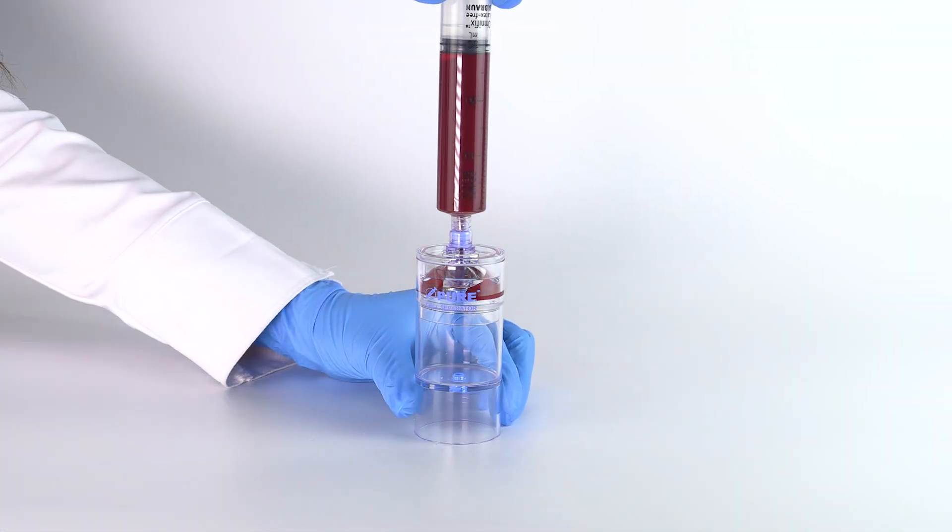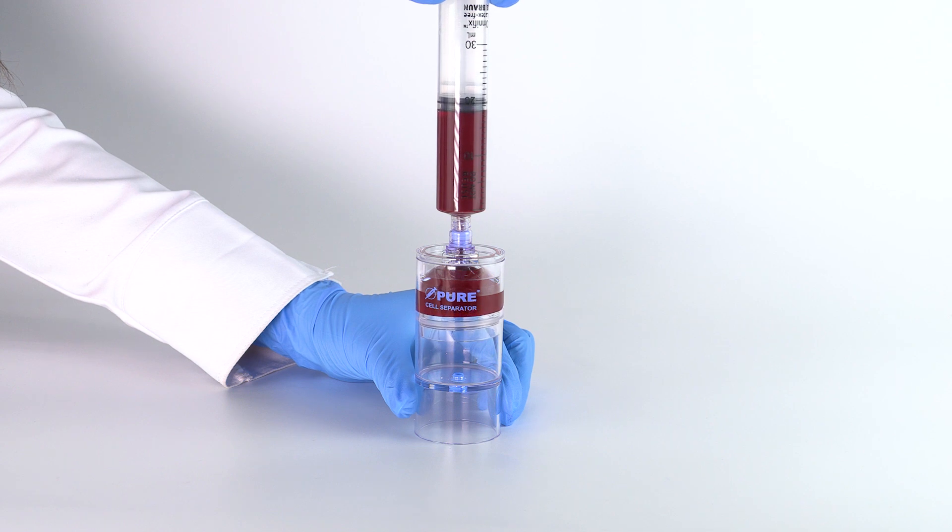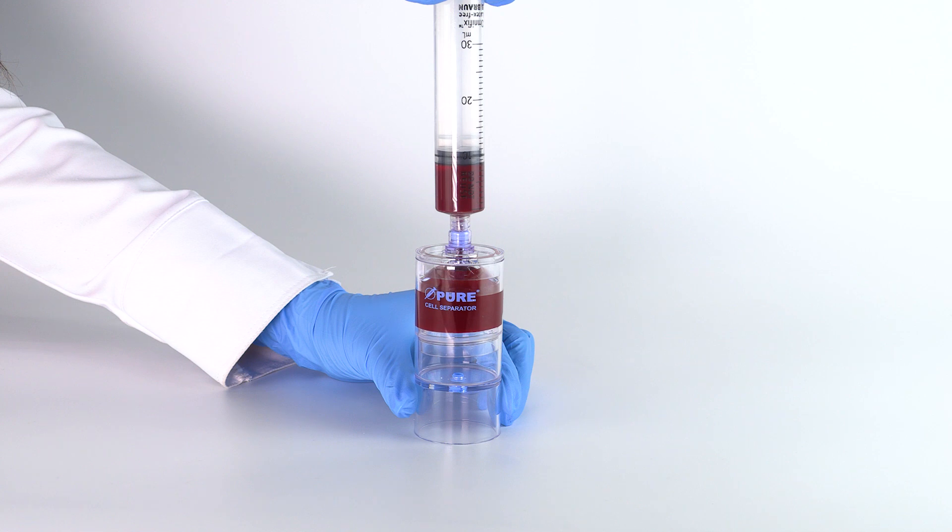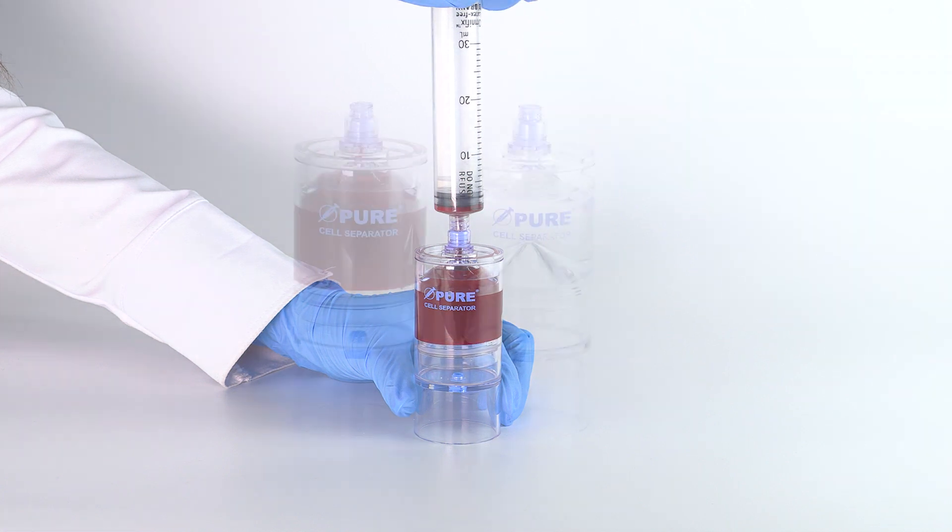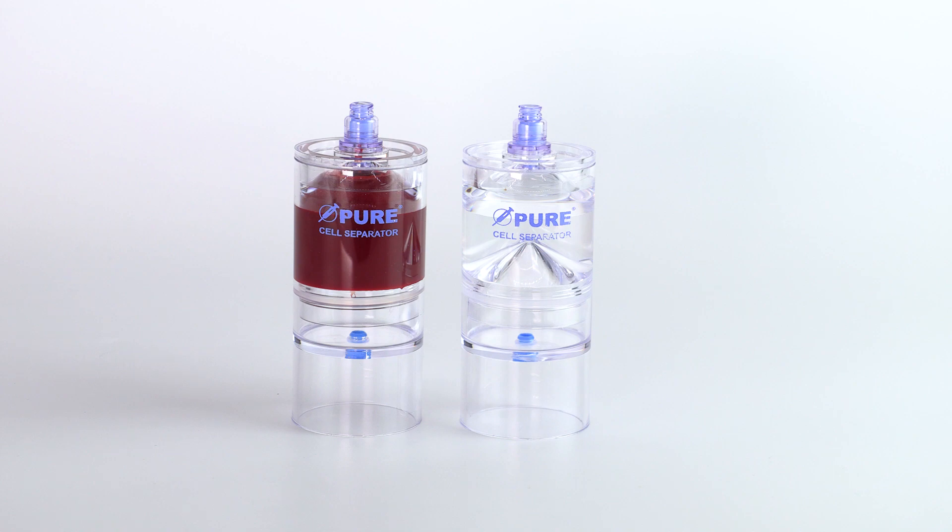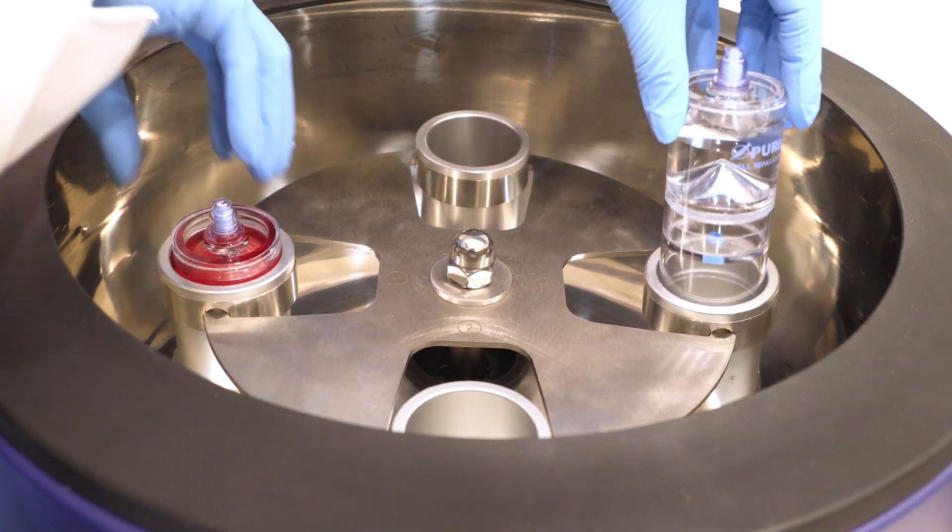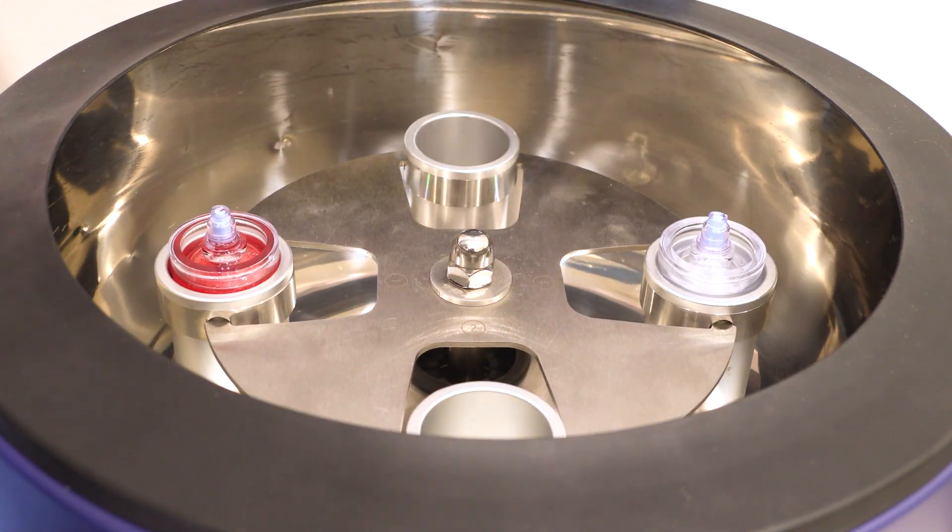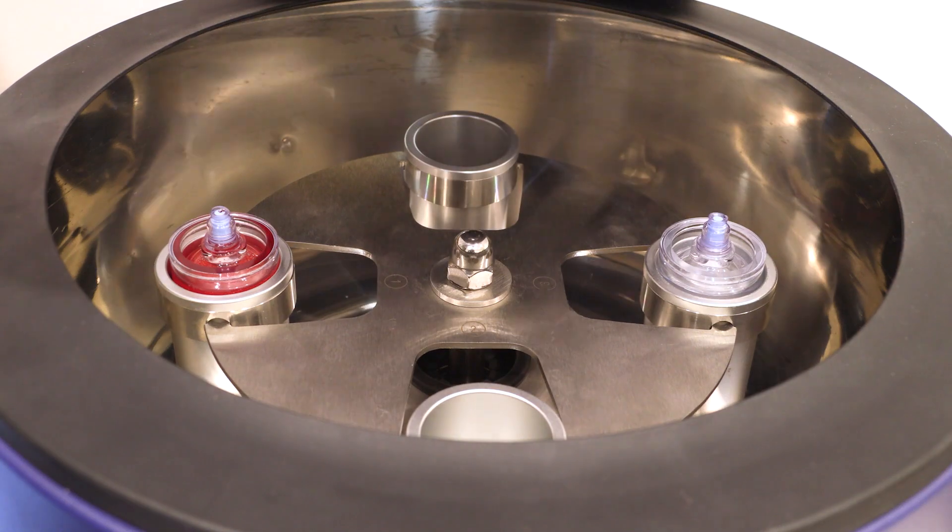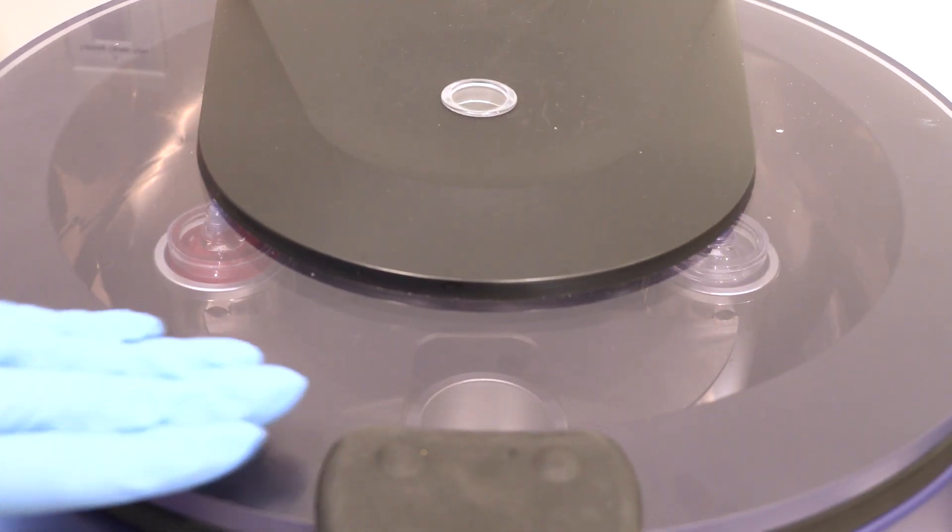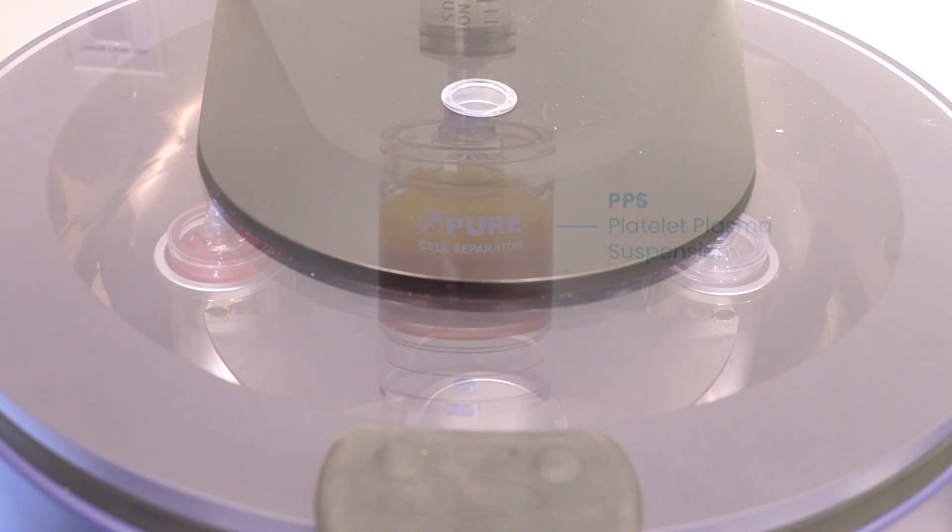Attach the 30 milliliter blood syringe to the needleless port of the separator device and slowly inject the anticoagulated blood. Use the counterbalance device to counterbalance with equal volume. Place both devices in the centrifuge rotor at opposite ends. Follow the protocol settings provided in the Pure 2 IFU insert. Close the centrifuge lid and press start.